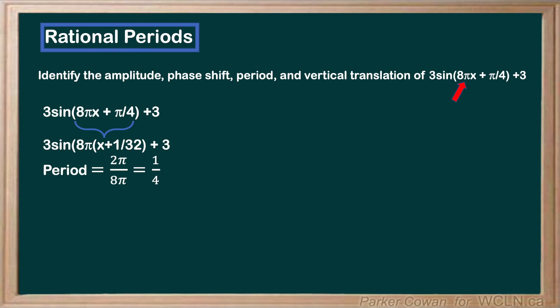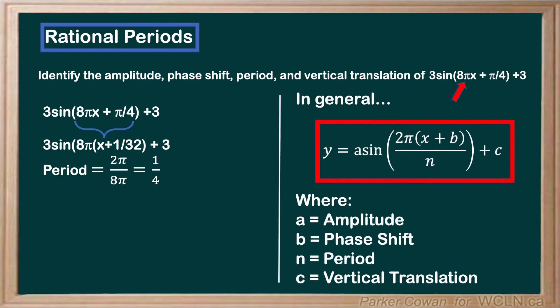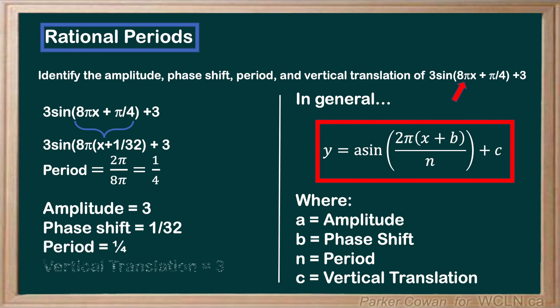We can then identify the remaining parts. If it helps, recall our general format for sinusoids. We see that our amplitude is 3, our phase shift is 1 over 32, our period is 1 over 4, and our vertical translation is 3.